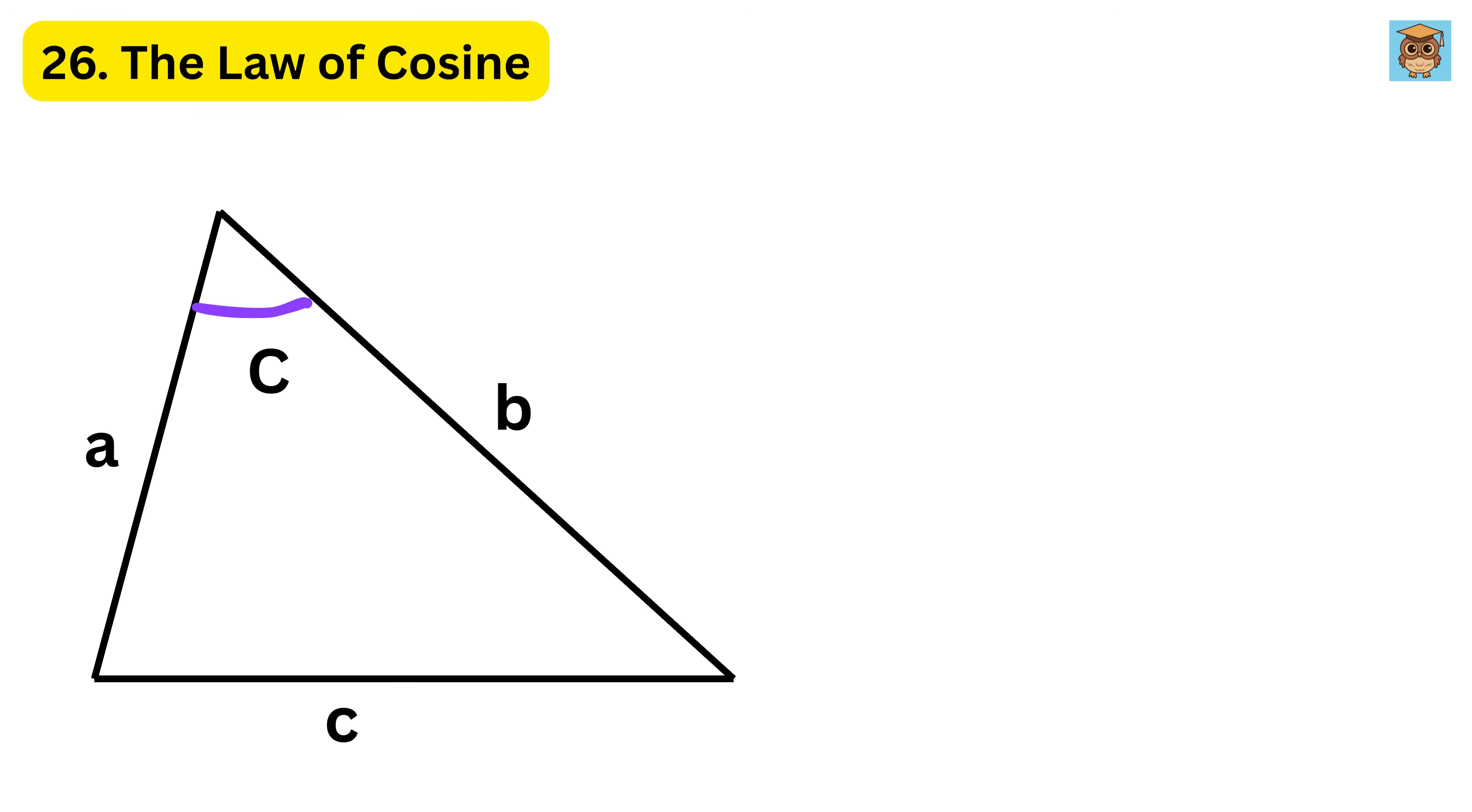26. The law of cosine. It is like a more advanced version of the Pythagorean theorem that works even when the triangle is not a right triangle. It says that C times C equal A times A plus B times B minus 2 times A times B times cosine of C, where C is the angle opposite side C.